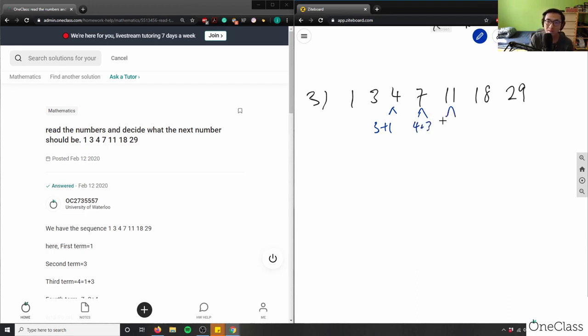11 here is 4 and 7. It's the sum of 4 and 7. And the 18 is the sum of 11 plus 7. And then 29 is the sum of 11 plus 18.